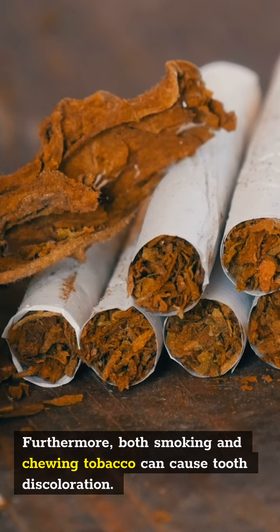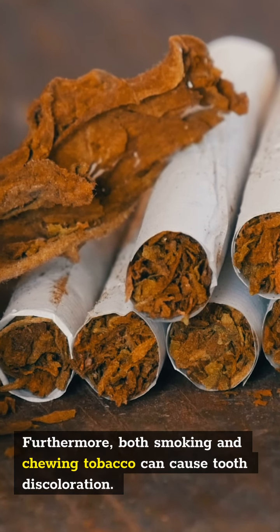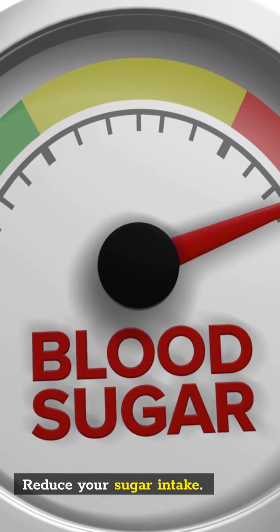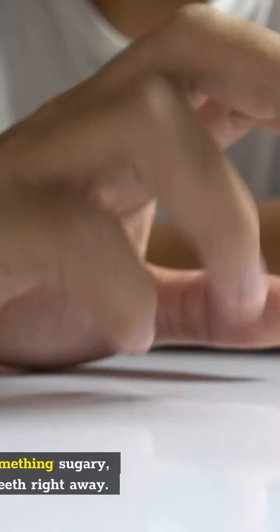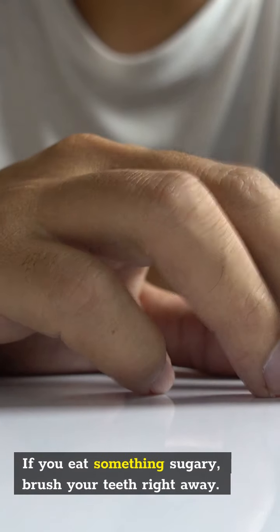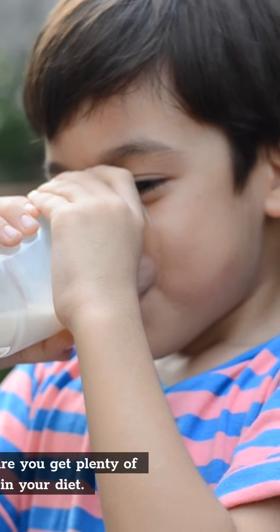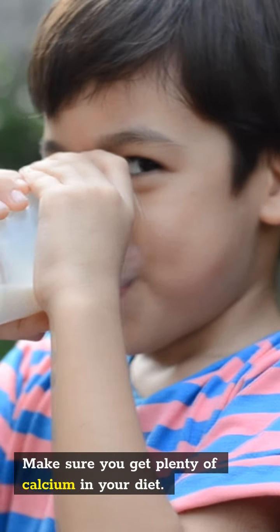Both smoking and chewing tobacco can cause tooth discoloration. Reduce your sugar intake. Reduce your sugar intake if you want whiter teeth. If you eat something sugary, brush your teeth right away.